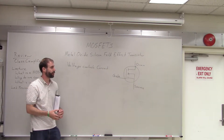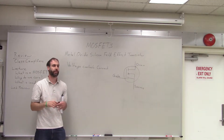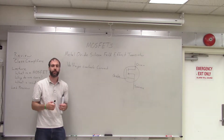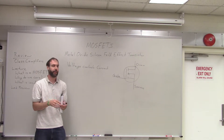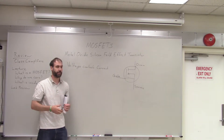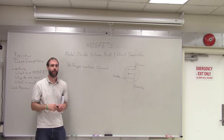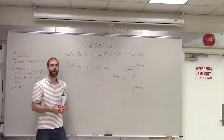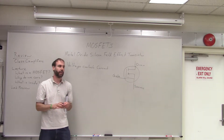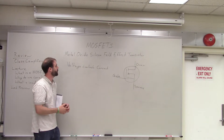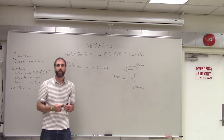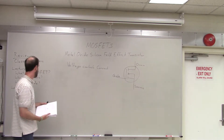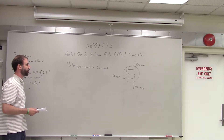MOSFETs are also the type of transistors found on silicon chips. When you have a phone or a computer chip with lots and lots of transistors inside, MOSFETs are the type they typically use. They're found in chips and in computer memory as well. So these are ubiquitous, and it's important to know how they work.